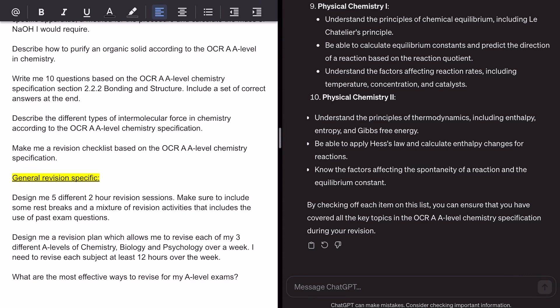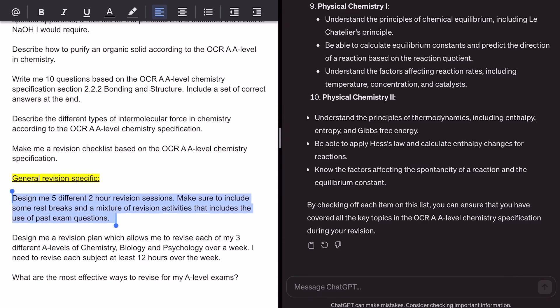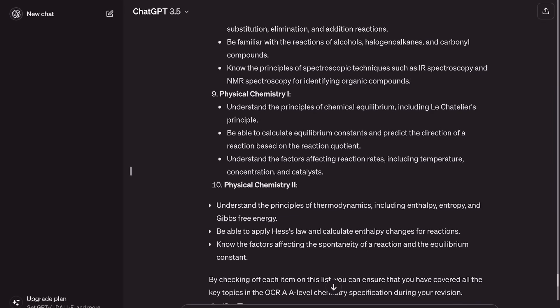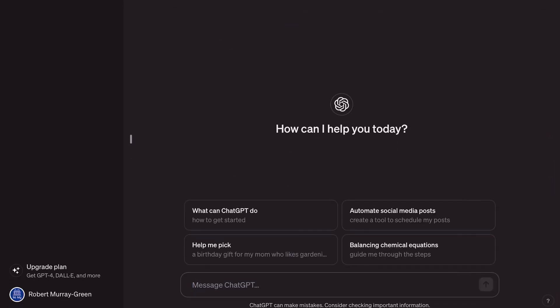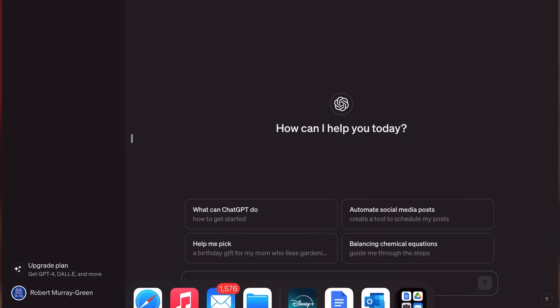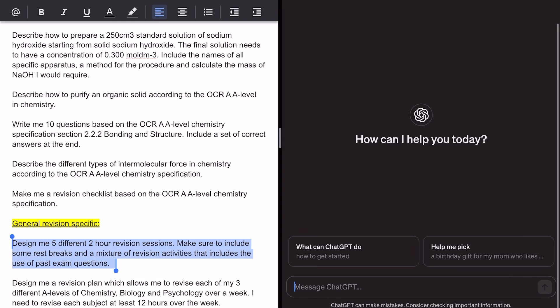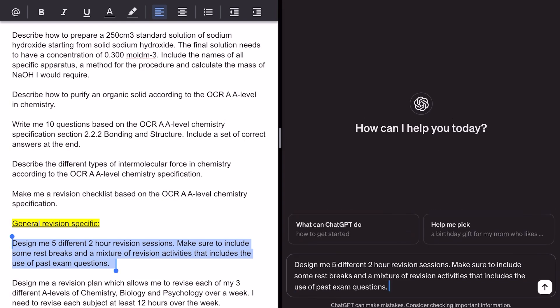All right, let's see if it can just help me do some general revision. Let's see if it can help me plan out my time. So I'm going to ask it to design me five different two-hour revision sessions. Make sure to include some rest breaks and mixture of revision activities that includes the use of past exam questions. So what we'll do is, since we're moving into a different set of questions here, we'll start a new chat with it. So we'll start our new chat because that means then we're not going to get too much overlap with all the chemistry stuff, and it won't just suggest us stuff on the things we've already asked because it does sometimes do that.